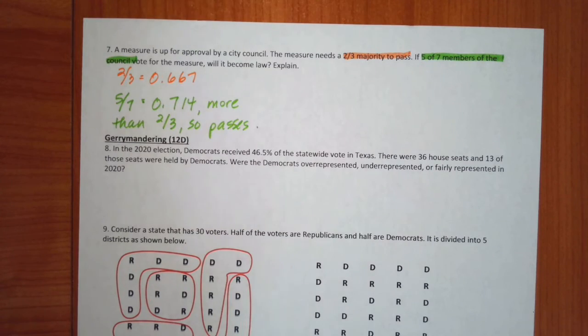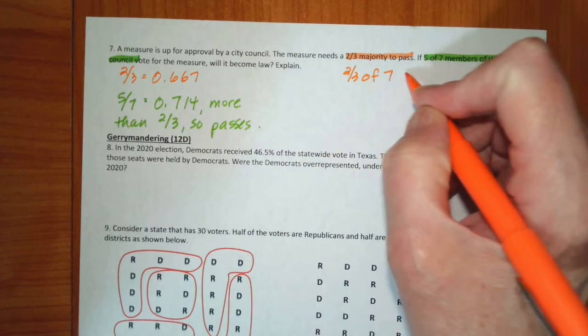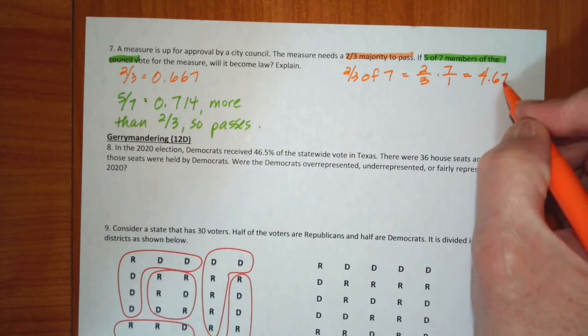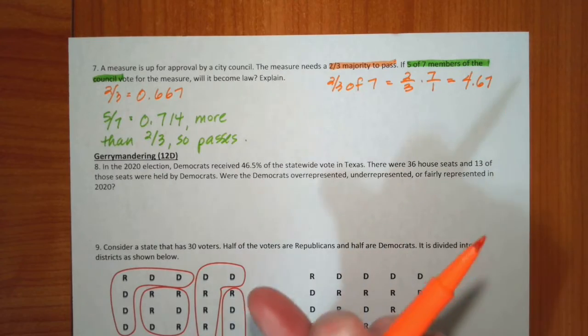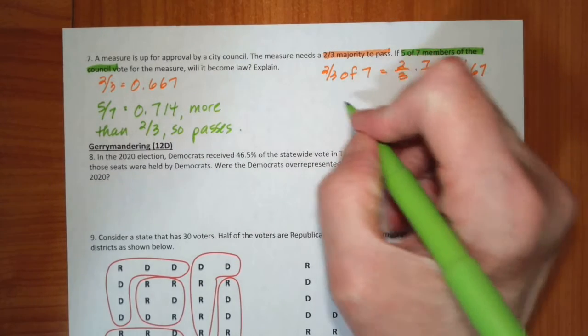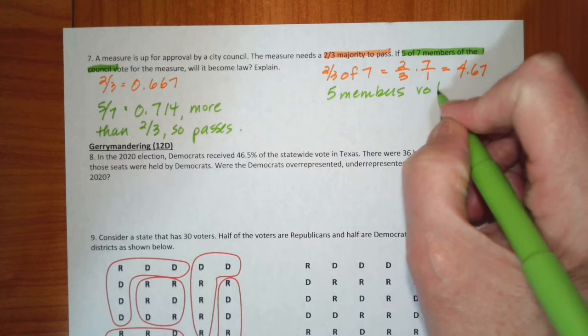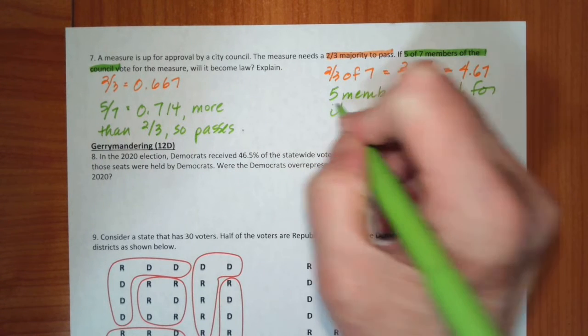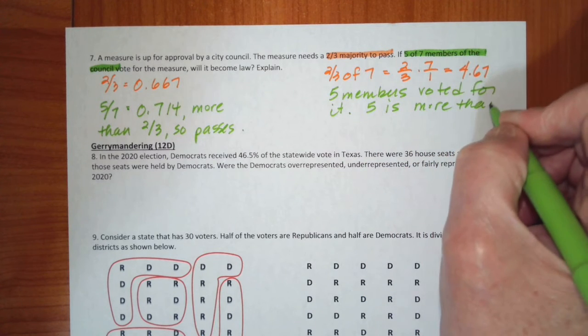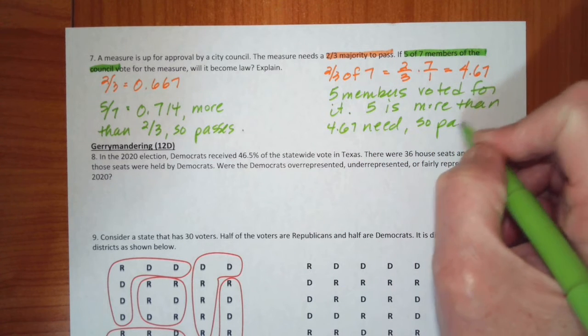Now there's another way that you can think about it. If there are seven total members, if you have two-thirds of seven, that's two-thirds times seven over one, which gives you 4.67. So I would need more than 4.67 members. So five members voted for it. Five is more than the 4.67 needed. So it passes. So there are a couple of different ways you can look at that.